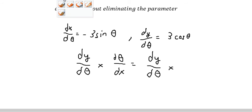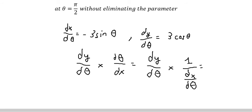That should be about 1 over dx over d theta. So this one you get about 3 cos theta. And then we simplify this one, and you will get about negative cos theta over sin theta.